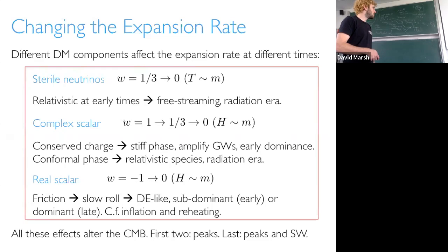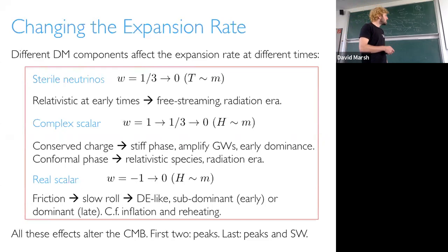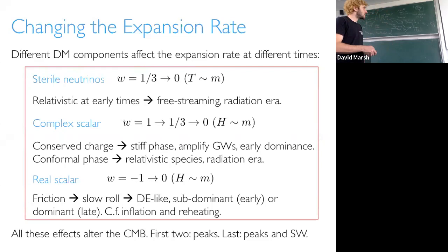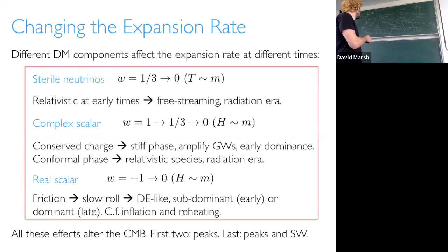The first two (sterile neutrinos, complex scalar) affect the peaks only because they're large equations of state from the radiation era. The real scalar can do both: it can affect the peak structure if it undergoes the transition H ~ m in the radiation era but not too deep in it, or it can affect the location of the first peak, the angular size and the sound horizon, if it undergoes this transition in the matter era.